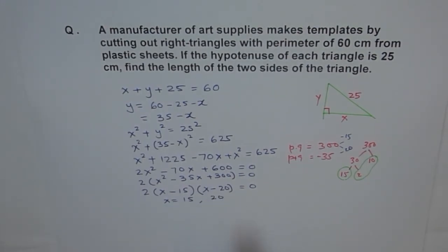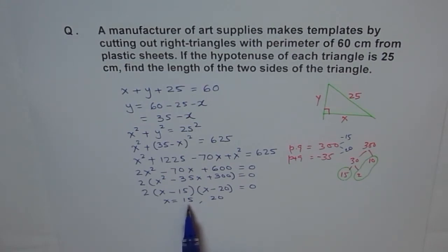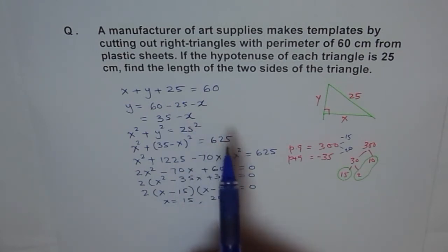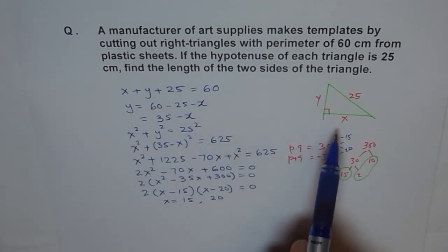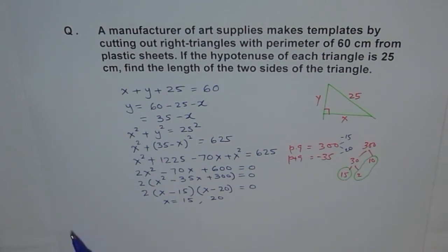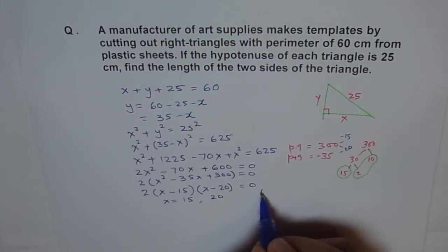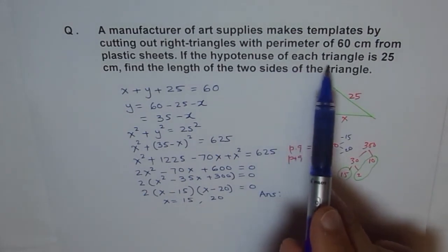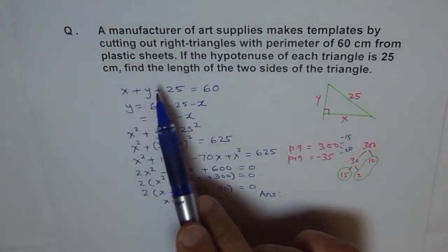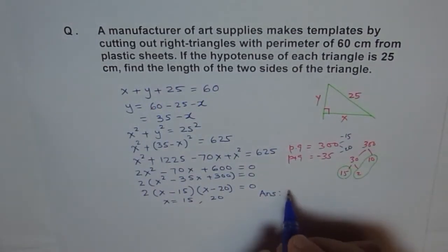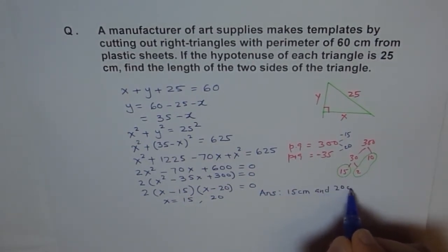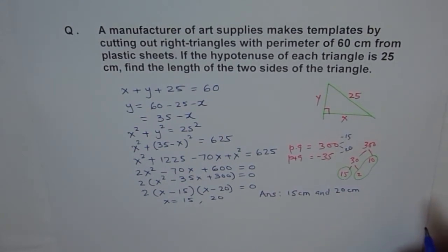Now, if we take x as 15, then y should be 35 minus 15, which gives us 20. So one side is 15 and the other side is 20. We can now write down the answer: the length of the two sides of the triangle are 15 cm and 20 cm respectively.